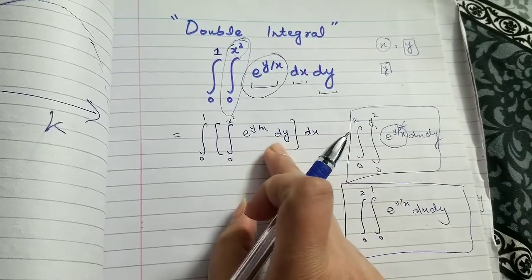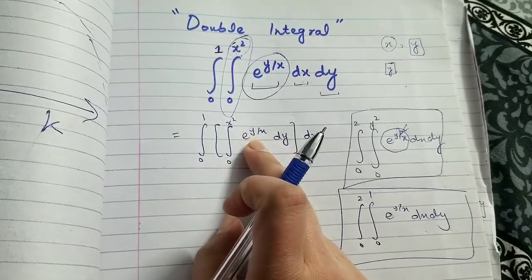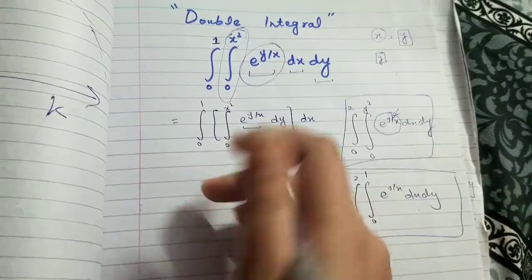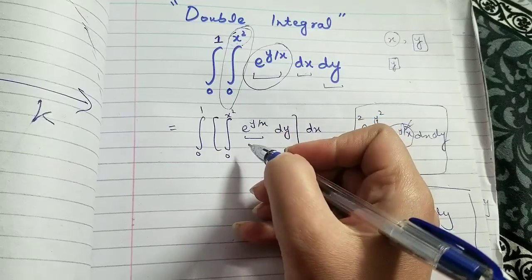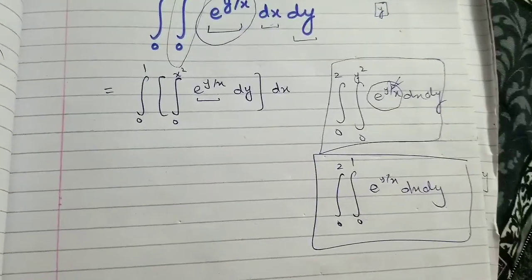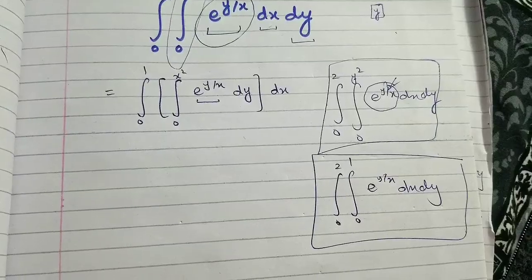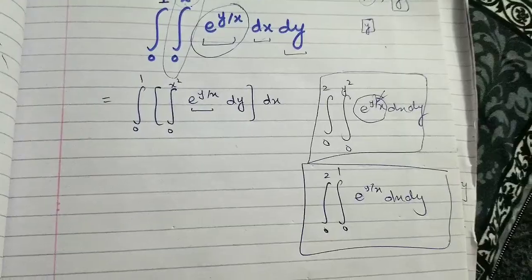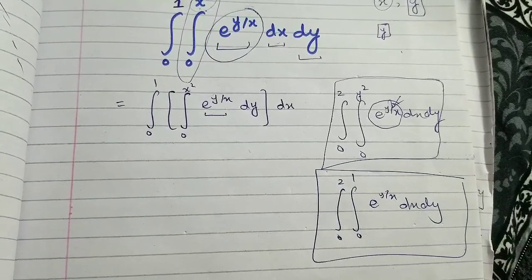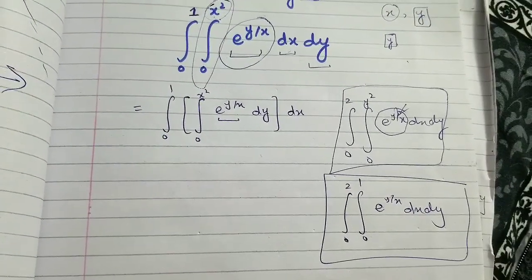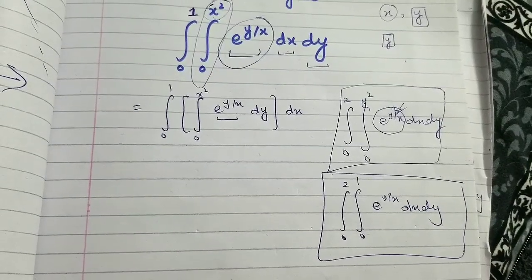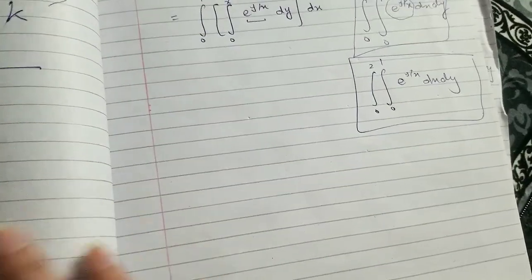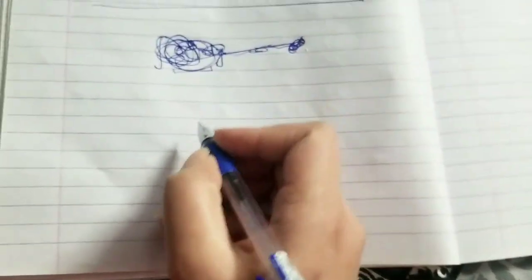Since we have to integrate with respect to y first, y will be taken as the variable in this function. We have our exponential function here. I have already uploaded a video explaining the general rule for integration of exponential functions, which is not familiar to many students — I recommend watching it. I'll link it in the comment section, but I'll explain it here too.